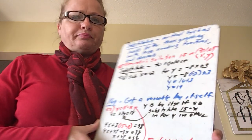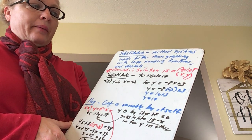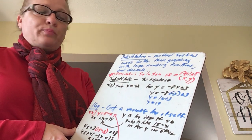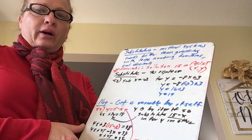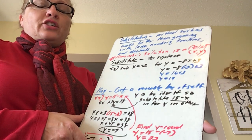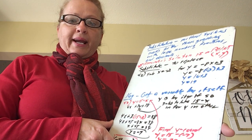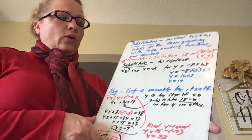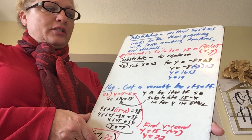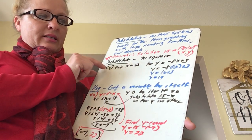The next method we're going to use is substitution. Substitution is a method used for solving systems that works better than graphing with large numbers, fractions, or decimals. Remember, a solution to a system is an ordered pair that works in both equations. So if this new method is called substitution, what does substitution mean? It means to replace.